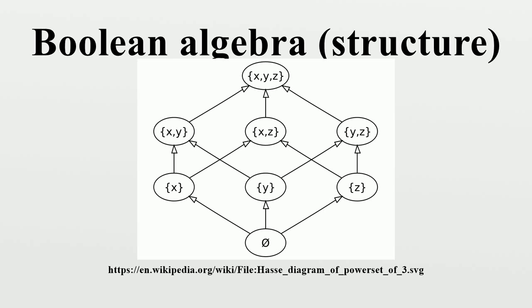It can be shown that every finite Boolean algebra is isomorphic to the Boolean algebra of all subsets of a finite set. Therefore, the number of elements of every finite Boolean algebra is a power of 2.